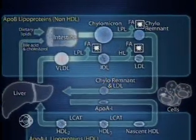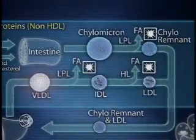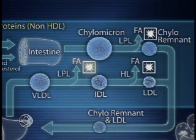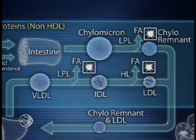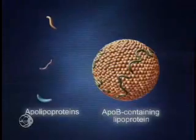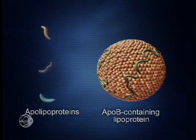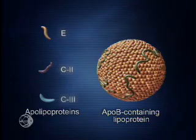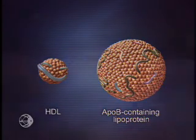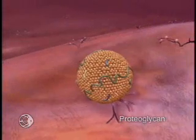Traveling along similar pathways, ApoB particles are remodeled into smaller and smaller cholesterol-rich remnants as triglycerides are released in the form of fatty acids to peripheral tissue. The newly assembled ApoB-containing lipoproteins are secreted from the intestine or liver into the lymph or plasma respectively. Secreted with them are apolipoproteins E, C2, and C3, which may also be acquired from HDL.